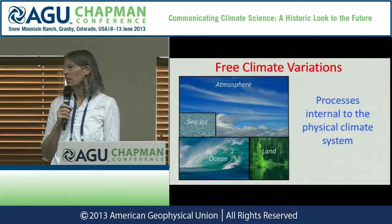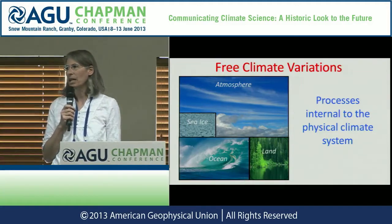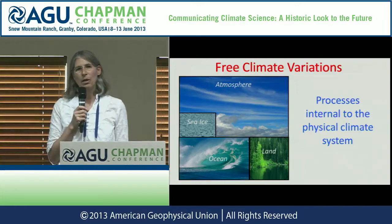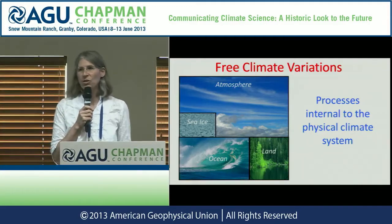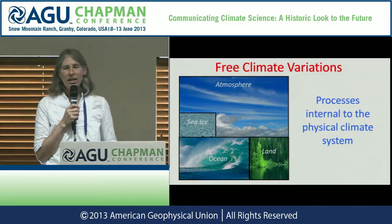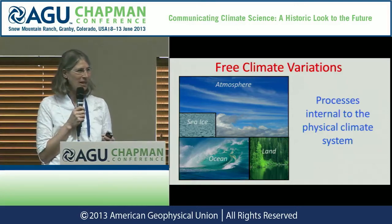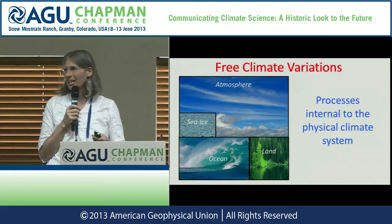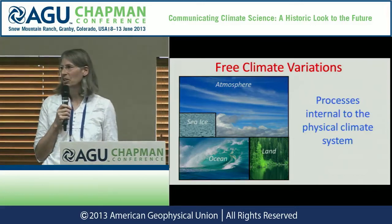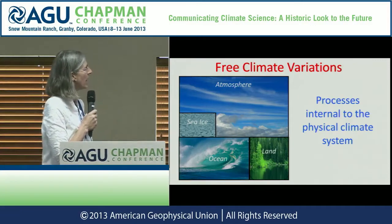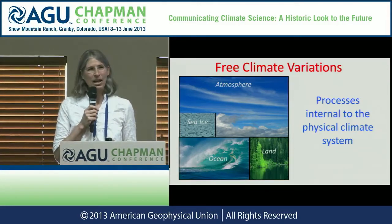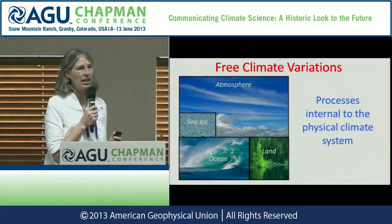Where do these unforced — or free — variations in our climate system come from? They come from interactions among the atmosphere, the ocean, the cryosphere, and the land system, and can be thought of as spontaneously generated. This is the butterfly effect. The system is chaotic enough that it can set us onto a different course for some period of time just because of the complexity of interactions among these components.